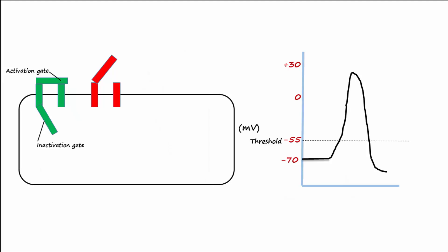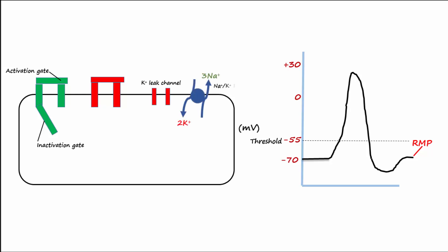After the potassium voltage-gated channel is completely closed, the cell returns to minus 70 millivolts resting membrane potential. Once again, the cell is only permeable to potassium through the potassium leak channels, and the sodium-potassium pump is always working to maintain the sodium and potassium gradients. A gradient means that there is an area where it is high and where it is low. Remember that potassium is high inside the cell, and sodium is high outside the cell.